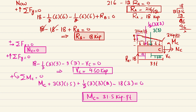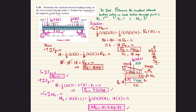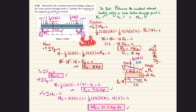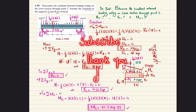In this way we have found the internal loading: NC equals zero, VC equals 4.5 kips, and MC equals 31.5 kip·feet. These are the answers to problem 1-19. I hope you enjoyed and learned from this video. If you are new to my channel, subscribe and hit the bell icon for notifications. If you have any questions, ask in the comment section. Thank you for watching.